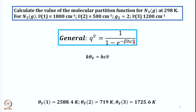Let us go a bit deeper. The vibrational temperature θv = hcν̄/k. Substituting the known values of h, c, and k gives the following results: for 1800 cm⁻¹, θv = 2588.4 K; for 500 cm⁻¹, θv = 719 K; and for 1200 cm⁻¹, θv = 1725.6 K. Notice the largest wave number gives the largest vibrational temperature, and the smallest wave number gives the smallest vibrational temperature.